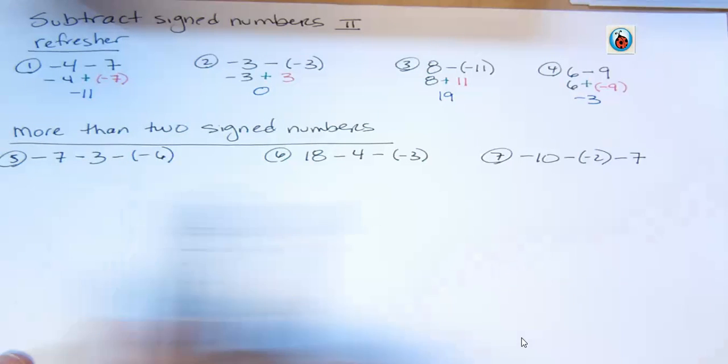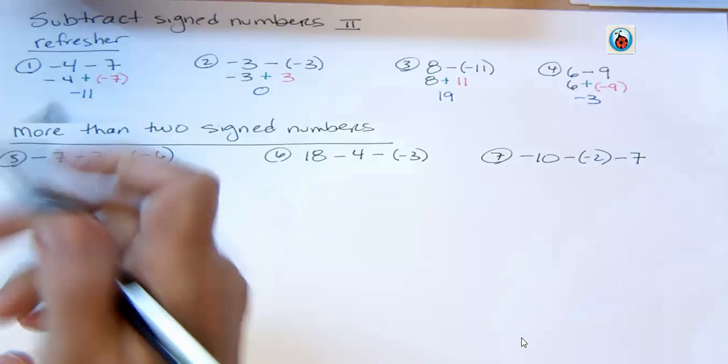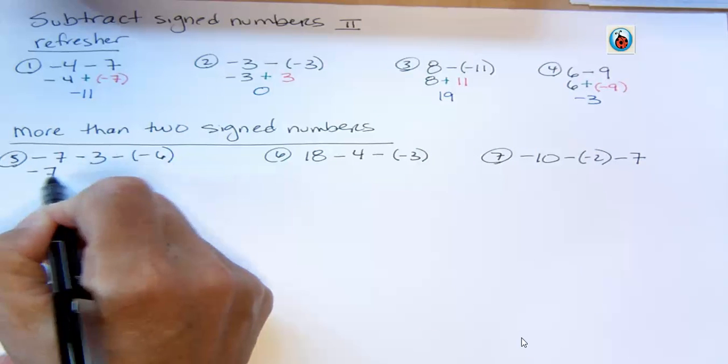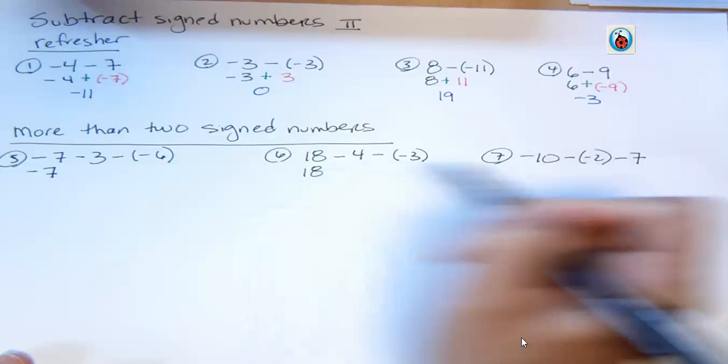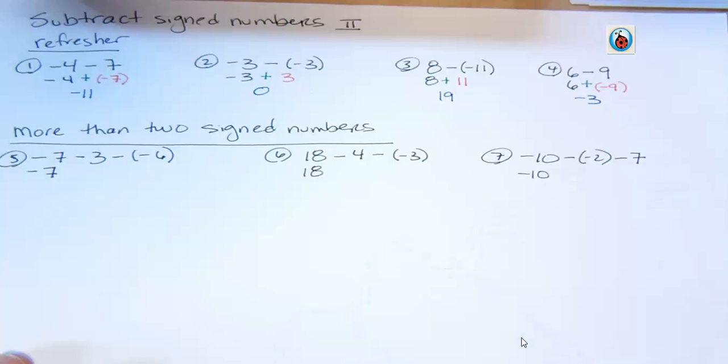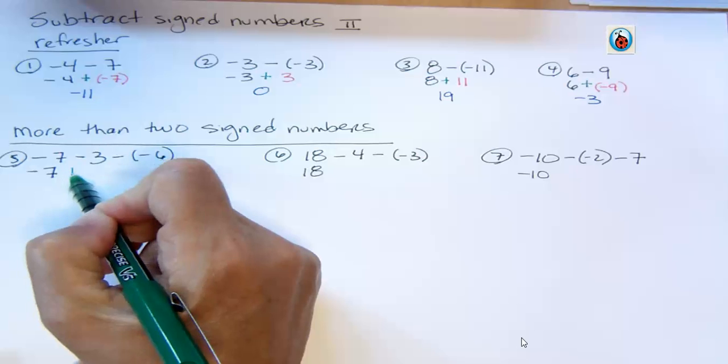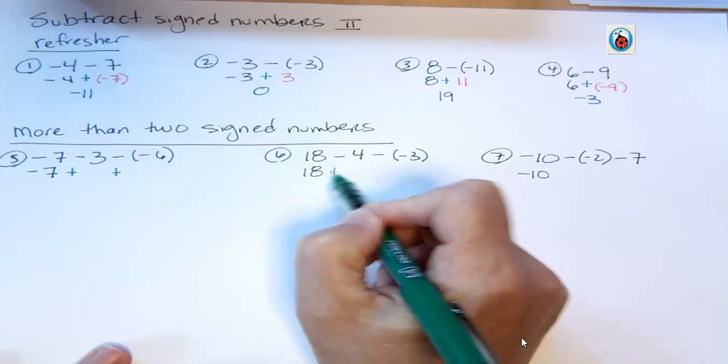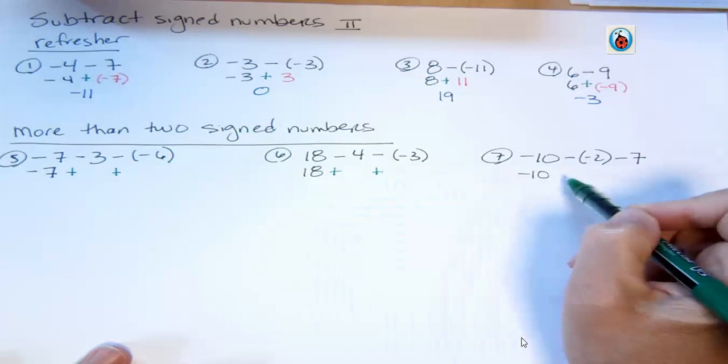We want those to be all addition. So what I'm going to do is I'm going to keep the first number the same. Always keep the first number the same. I'm writing those down in the beginning just to show you. Now I'm going to go back and I'm going to change every subtraction symbol to an addition.